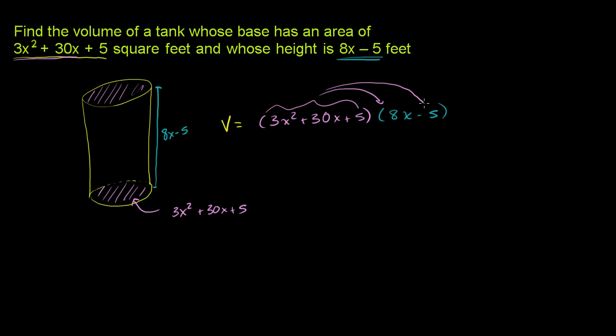You would just multiply this entire thing times each of the terms. That's what the distributive property tells us when you first learned it. So let's do that. So it's going to be this entire thing times 8x, or we could view it as 8x times this entire thing.